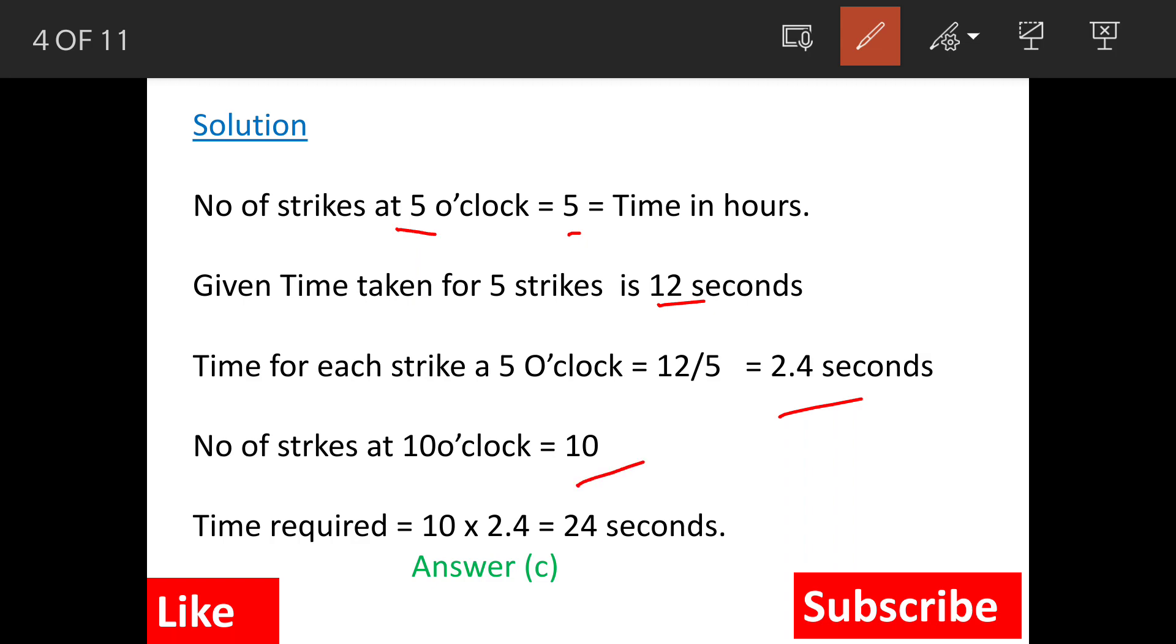Now at 10 o'clock, number of strikes will be 10. So time required will be how much? Here 2.4 seconds is for 1 strike. So for 10 strikes time will be 24 seconds and our answer is option C.